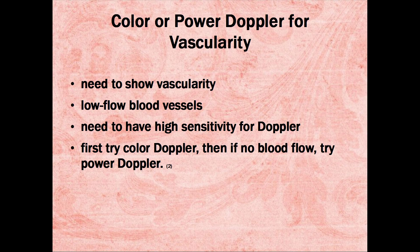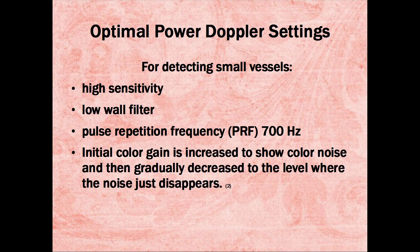We need to use either color or power Doppler to show vascularity. These are low-flow blood vessels going into the lymph nodes, so we need to have high sensitivity for Doppler. First try color Doppler, then if you're not seeing any blood flow, try power Doppler. The settings needed for detecting small vessels are low wall filter, a pulse repetition frequency of about 700 Hz. Initial color gain is increased to show color noise, and then gradually decreased to the level where the noise just disappears.